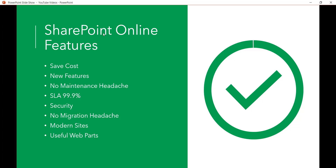Second, new features: if you use SharePoint Online, you get a lot of new functionality from Microsoft that won't be immediately available in the on-premises environment unless they release a patch or you upgrade. There are many features and user experiences available in SharePoint Online that are not yet in on-premises versions. Third, no maintenance headache — if patches or updates are required, the Microsoft team handles that in the background. The SLA is 99.99% uptime, and SharePoint Online has the highest number of security certifications, keeping your content and data secure.